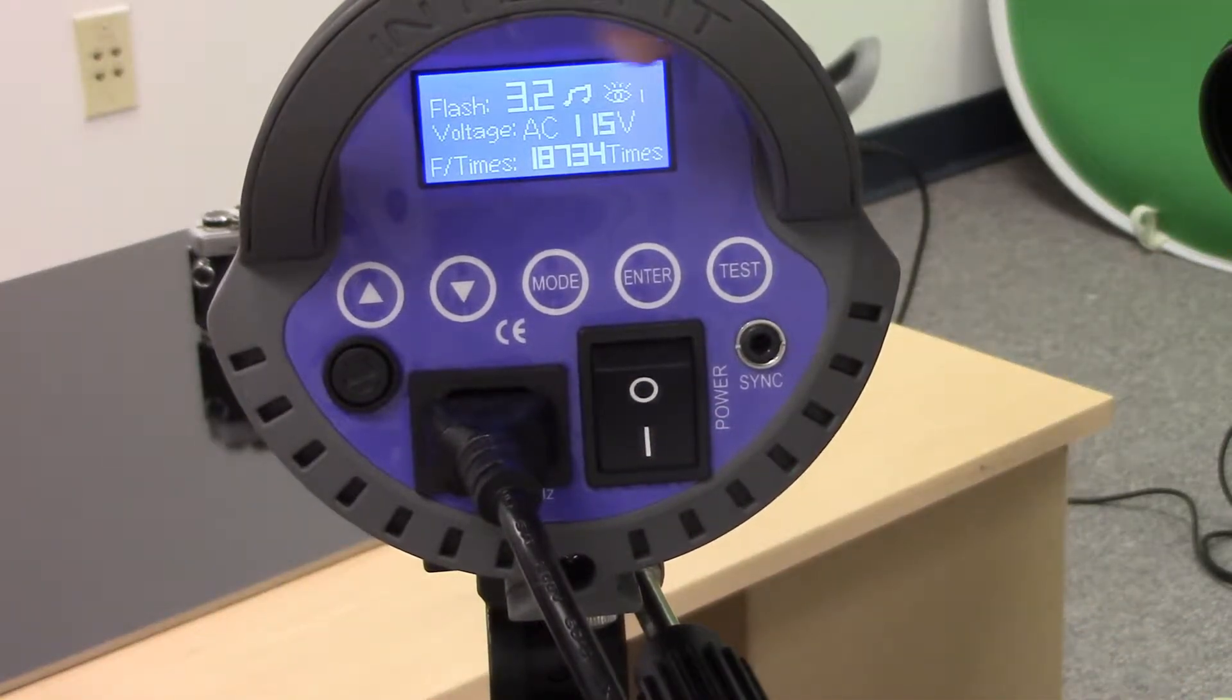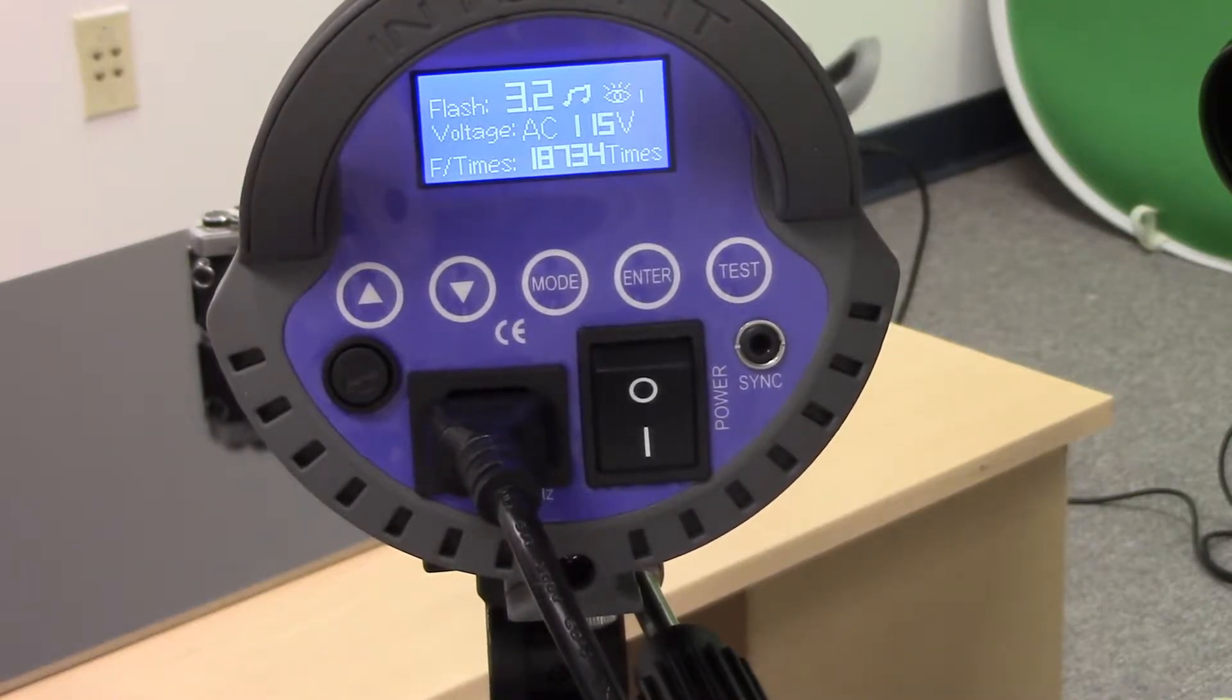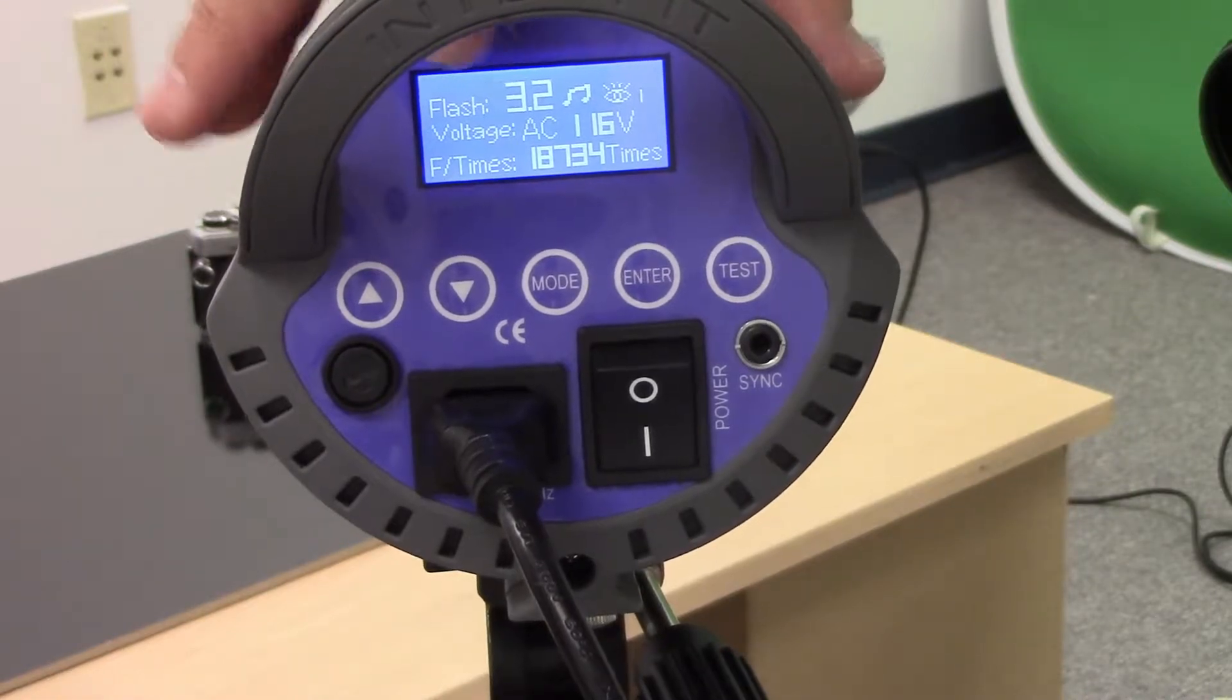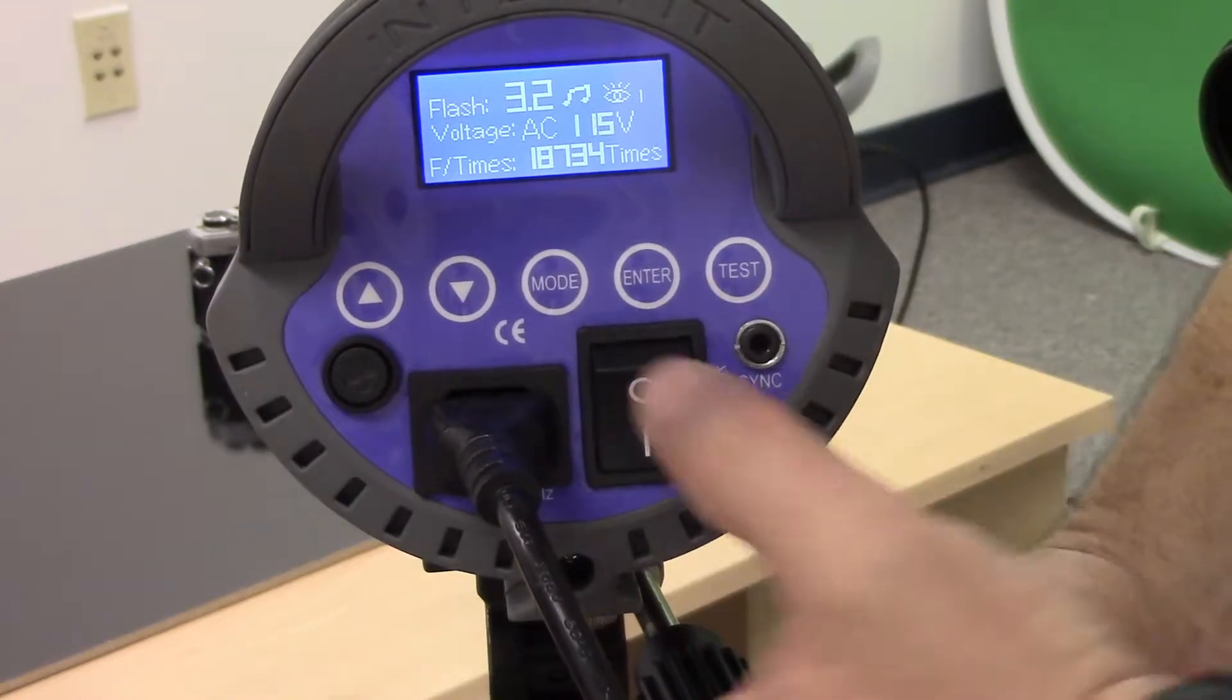It's going to give you a readout of a lot of different things. It's going to show you how many times that this particular light has been fired. That's going to give you the voltage coming from the outlet and it's also going to show you what flash power this light is. So just to cycle through a couple of these things real quick.